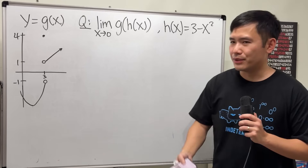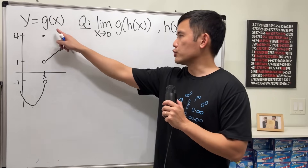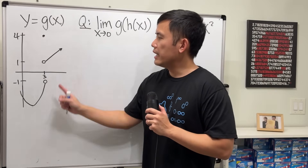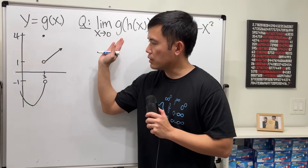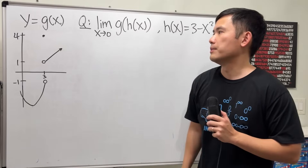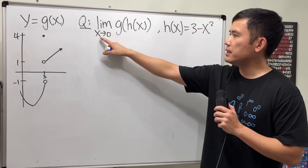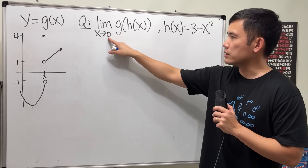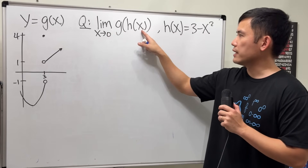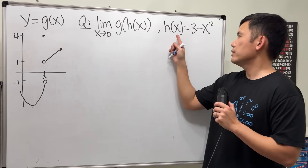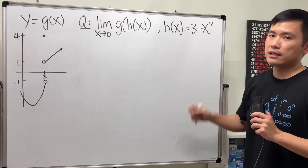Okay, let's have a look. First, we're given the graph for g of x, and this is the only portion that we care about, so that's what I have on the board. And we have to find the limit as x approaching 0 of g of h of x, and h of x is 3 minus x squared.